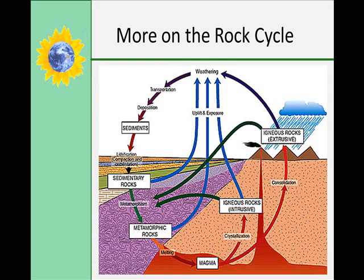The rock cycle illustrates several important facts about geology. First of all, that nearly all rocks are formed from other rocks. Coal and other sedimentary rocks of organic origins are the exceptions to that rule.